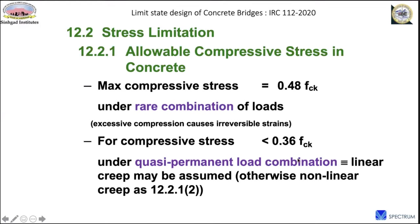A recently introduced annexure A8 gives detailed guidelines for fatigue verification. If you want to use higher steel stresses of say 350 or 400 MPa and achieve economy, you must carry out the fatigue check and prove the section is safe. For prestressed concrete members, if there are no tensile stresses in the extreme fiber for the frequent load combination, no fatigue check is necessary. The main compressive stress limit is 0.40 times fck under the rare combination, and for crack control purposes the code has specified certain crack width limits for different exposure classes.